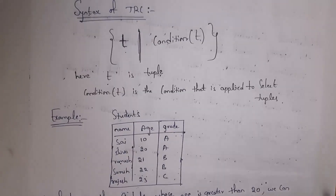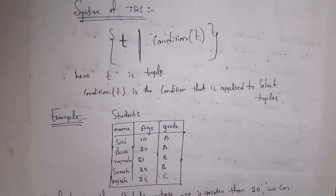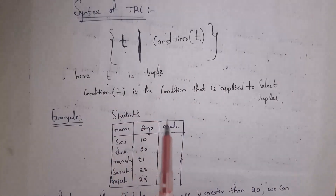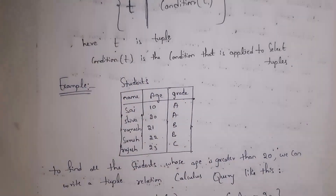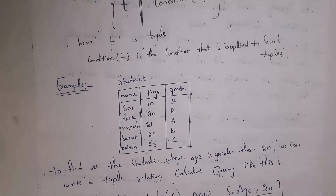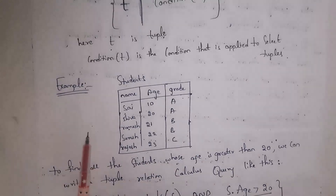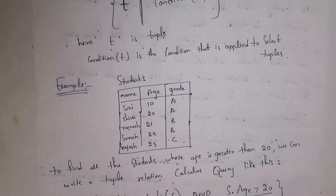This is the syntax of tuple relational calculus, where t stands for tuple, followed by a bar and then condition of t, represented inside curly braces. Here t stands for tuple and condition of t is the condition we need to give in order to select tuples. For example, there is a students table containing student information. I want to select complete records of students whose age is greater than 20. Ram's age is 21, Suresh's age is 22, and Rajesh's age is 23, so we need to select all three records as output. Tuple relational calculus will select the entire tuple — the entire record — as output, displaying name, age, and grade of these three students.